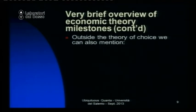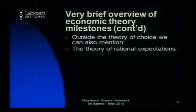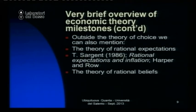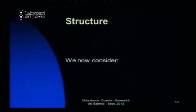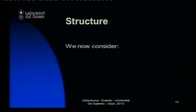Outside of the theory of choice, which underpins a lot of economics, there were of course other milestones. You may have heard about the theory of rational expectations, which is very important in a lot of macroeconomic models. Much less well-known is the theory of rational beliefs, developed by Mordechai Kurz at Stanford in the economics department, which I don't think ever caught on as an alternative to rational expectations theory. This is just a very brief overview of what I think are the major milestones in economics — non-exhaustive, but just to set the tone of where we are going.